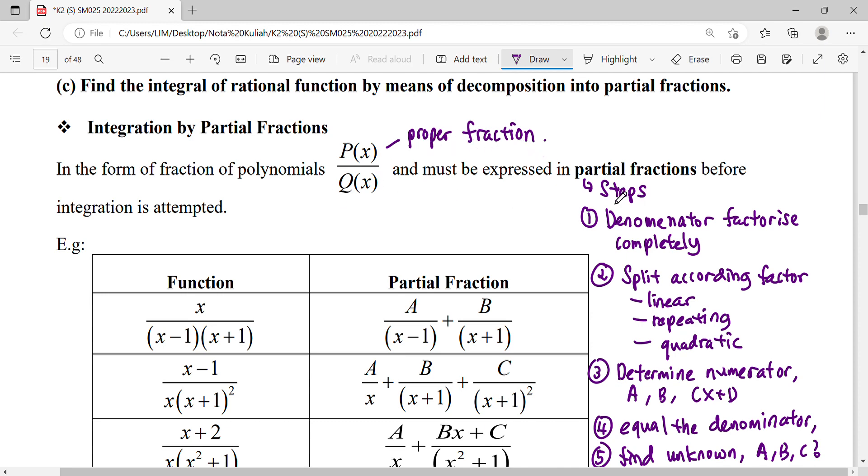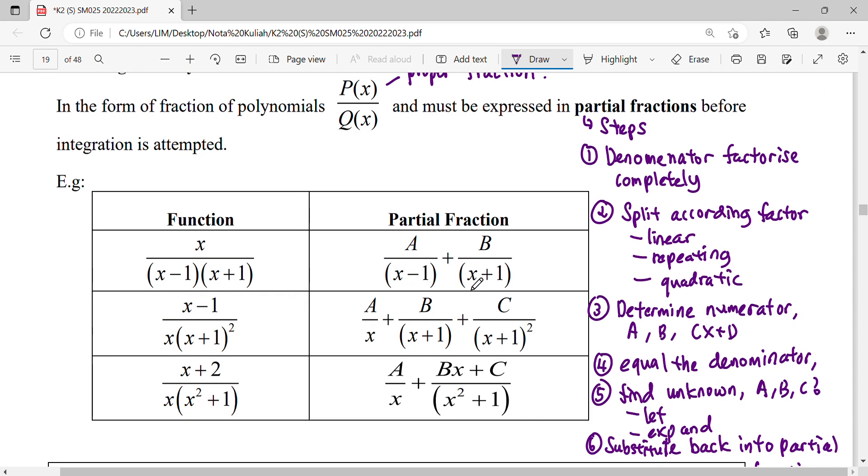Here will be our steps. Make sure our denominator factorizes completely. Then we spread out the factor according to the situation. You might get a linear factor, a repeating factor like this, or you might get a quadratic factor.